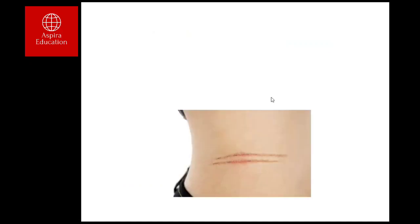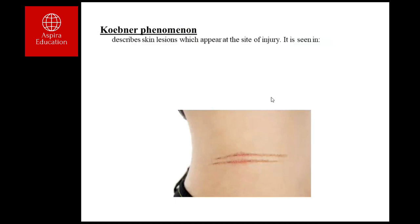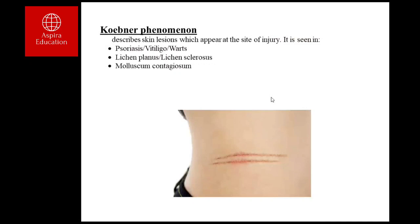When describing skin lesions, there is a peculiar phenomenon called Koebner's phenomenon, also known as the isomorphic phenomenon. This describes a skin lesion appearing at the site of injury. It is classically seen in psoriasis, vitiligo, warts, lichen planus, and molluscum. For example, if a psoriatic lesion is present on the forearm and the trunk is scratched, a psoriatic lesion can appear at that scratch site. This helps narrow down differentials.